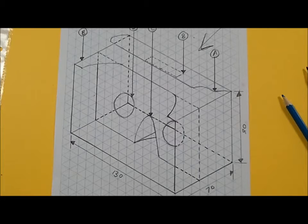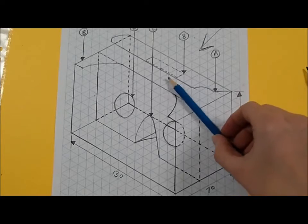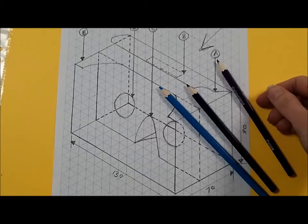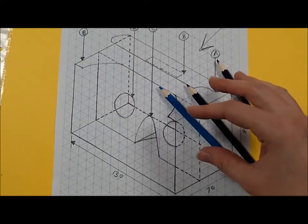Right then, welcome back Year 9 to our fifth tutorial, and this is going to be talking all about rendering. For this tutorial, I've selected three harmonious colours: light blue, dark blue, and purple. The reason I've chosen these colours is because they link next to each other on the colour wheel and work in harmony when we're shading.